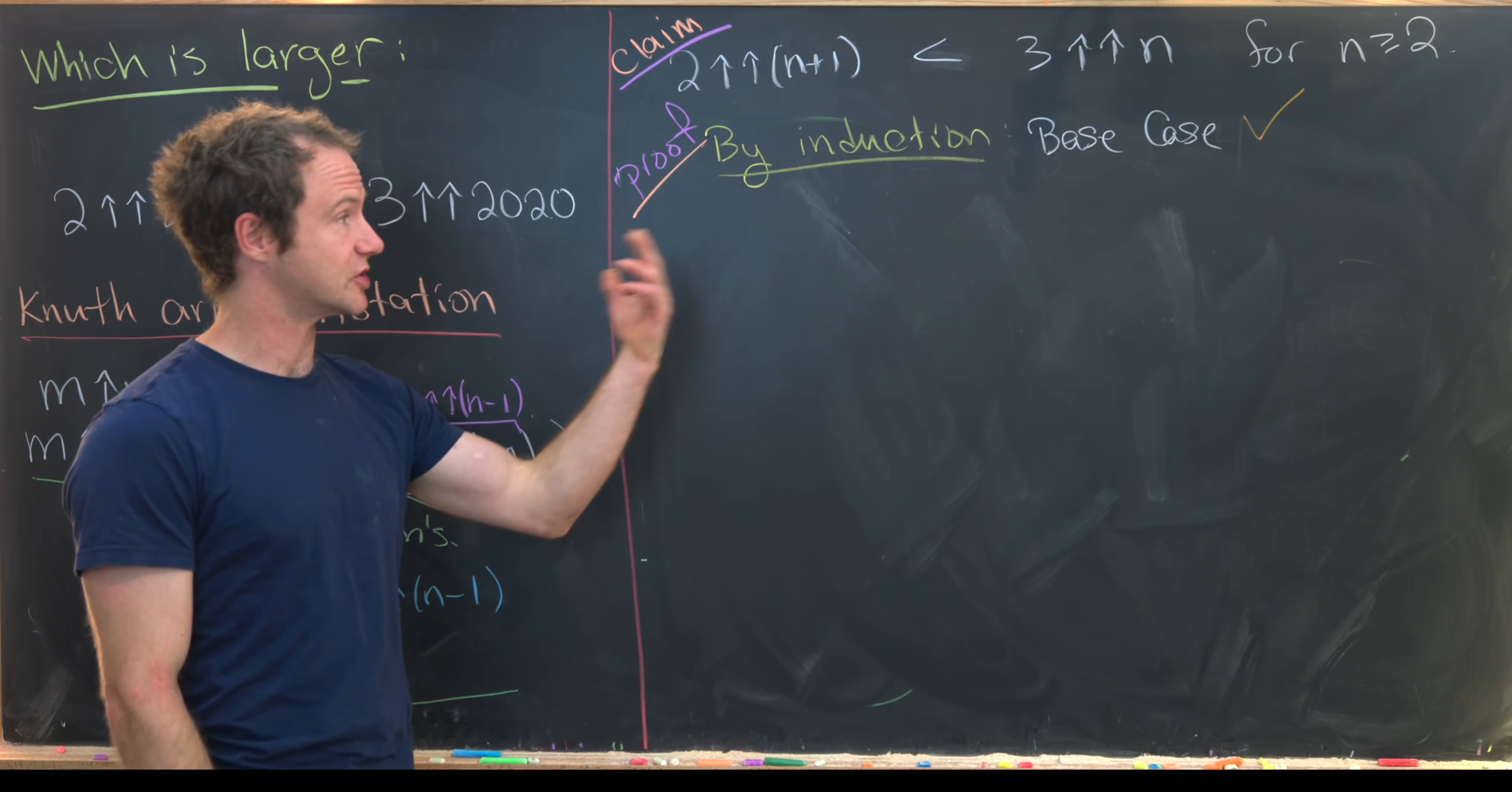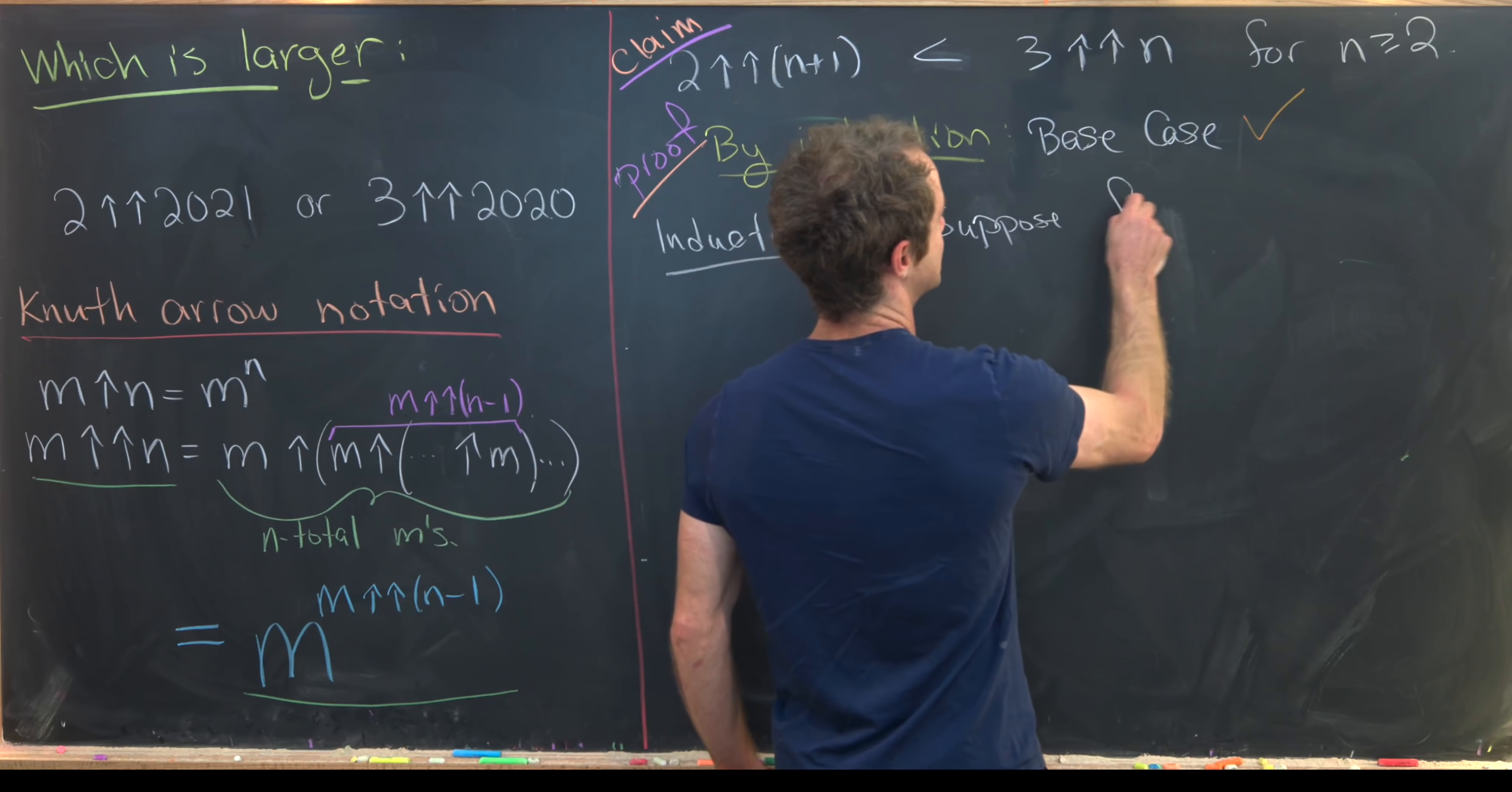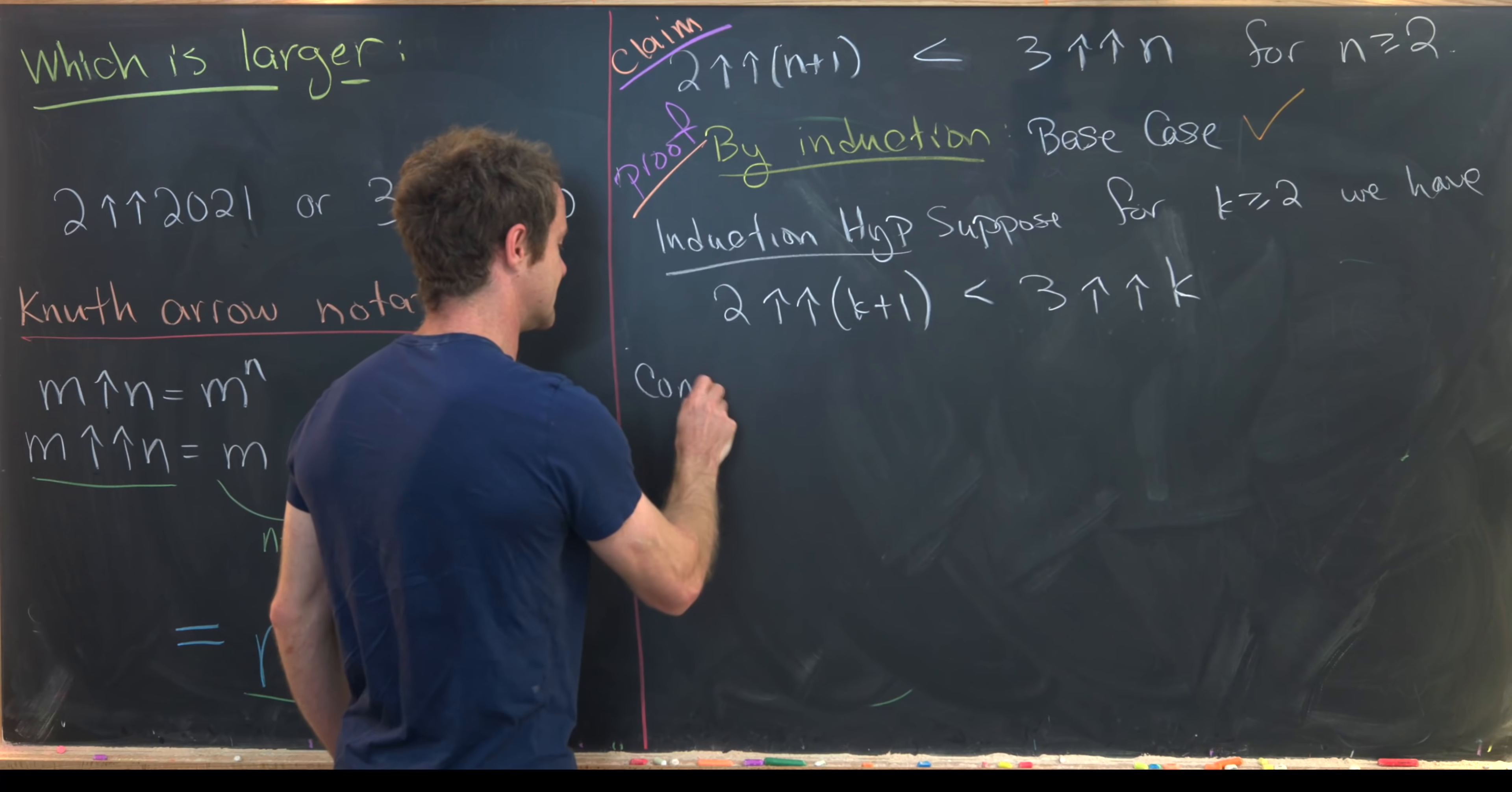We're going to do this proof by induction. We already have the base case from our exploration on the last board. So now we just need to make an induction hypothesis and then use that induction hypothesis to prove that the next case holds as well. So let's maybe go ahead and suppose for some k bigger than or equal to 2 we have 2 double up arrow k plus 1 is less than 3 double up arrow k.